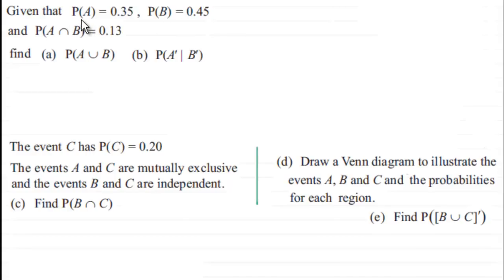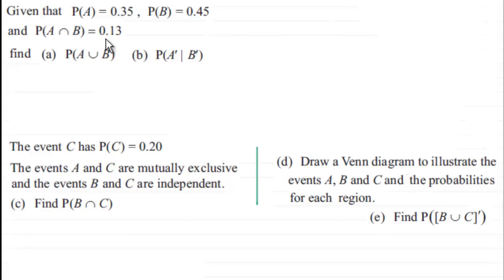We're given two events A and B. We're told that P(A) = 0.35, P(B) = 0.45, and P(A∩B) = 0.13. We need to find P(A∪B) and also P(A'|B').